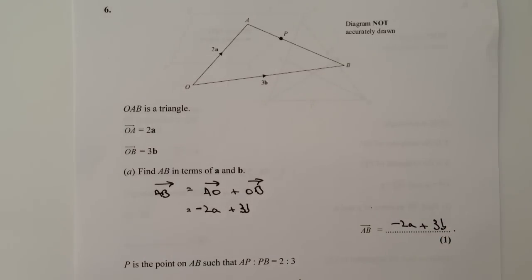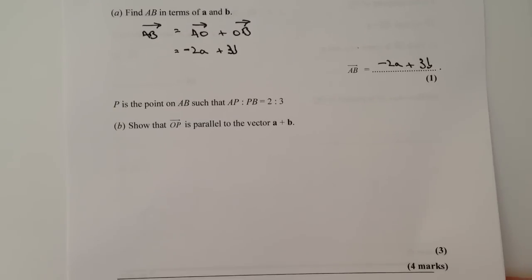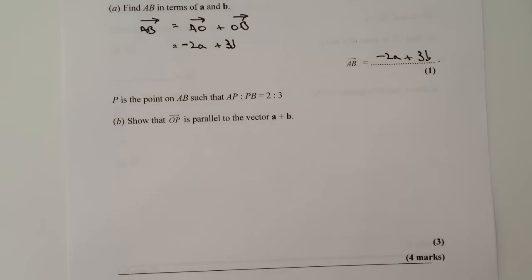OK, so the first part of the question usually gives you a bit of a clue to the next part of the question, which on this particular problem is quite tricky, but I hope you'll be able to work through OK with it. So what it says is that P is a point on AB, so that AP to PB is in a ratio 2 to 3. Show that OP is parallel to the vector a plus b.